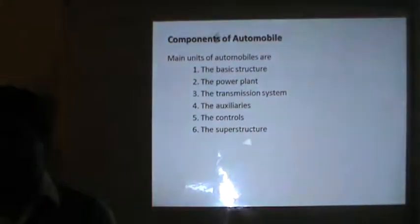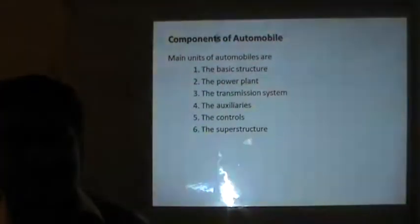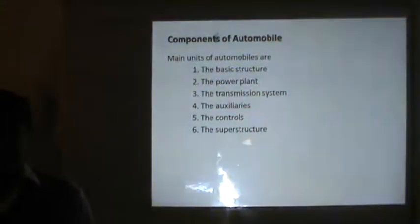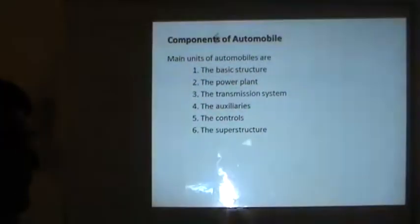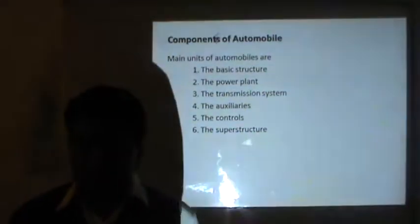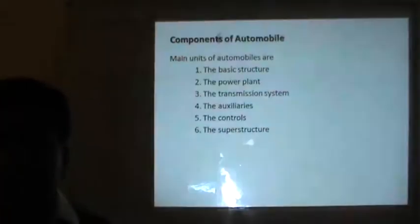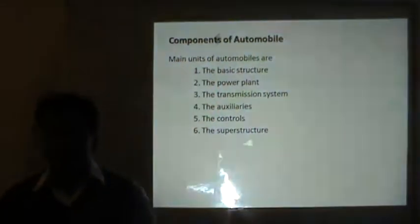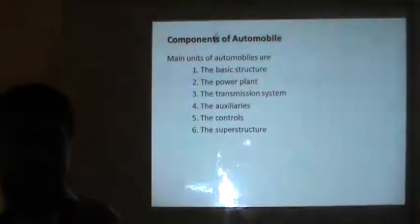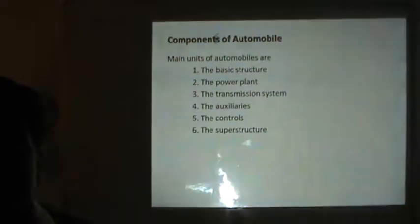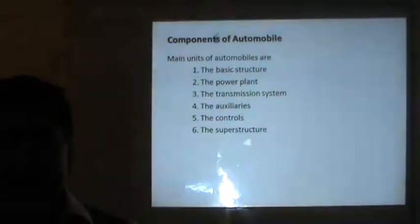The fifth component is control — we have to brake, stop, accelerate, and decelerate the automobile, so all those controls are required. The sixth component is the super structure, or body — how the structure is made. In this complete course we are going to discuss all these components in detail, from their construction to their design, and by the end of the course we will understand the basics and working of automobiles, along with initial knowledge of automobile design.